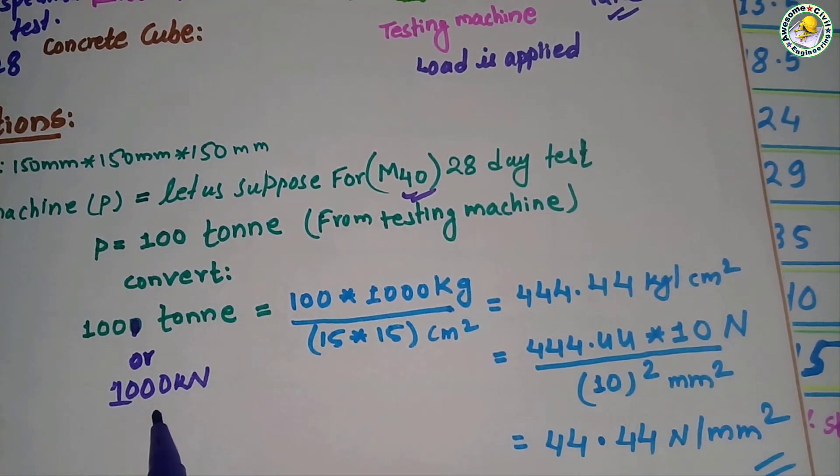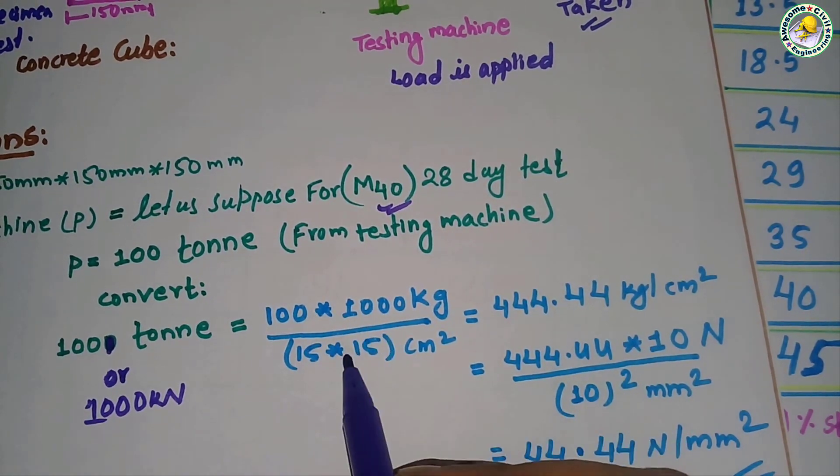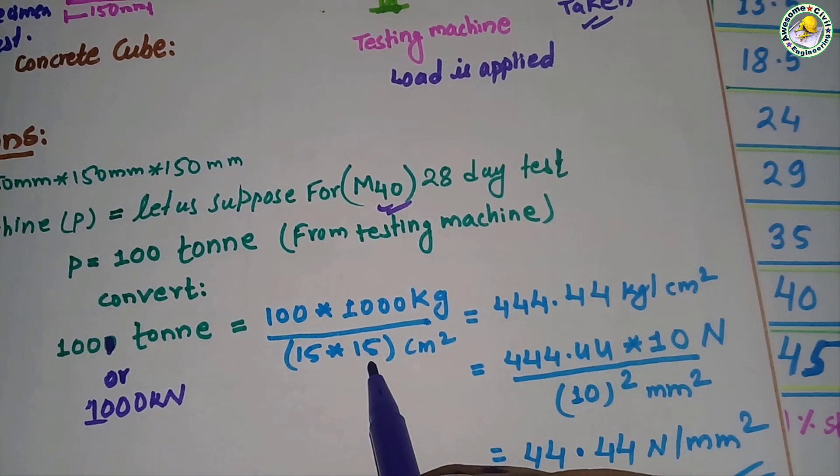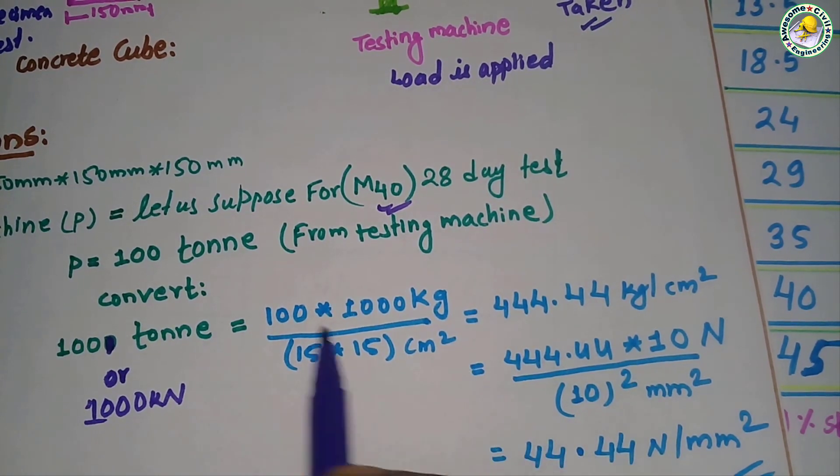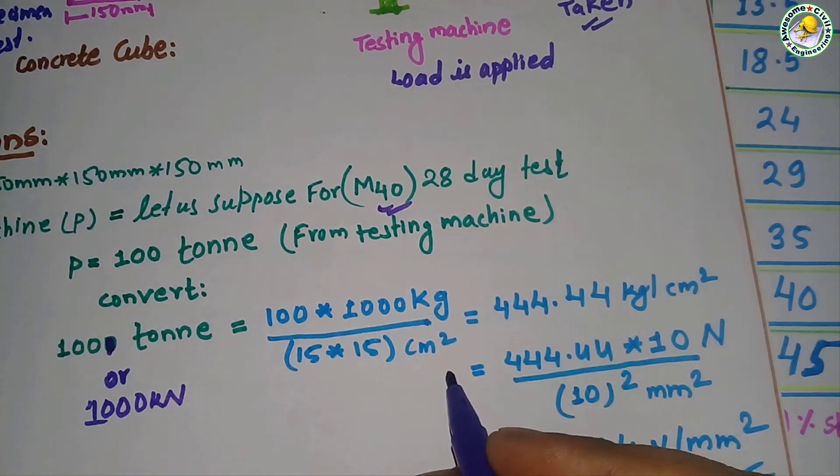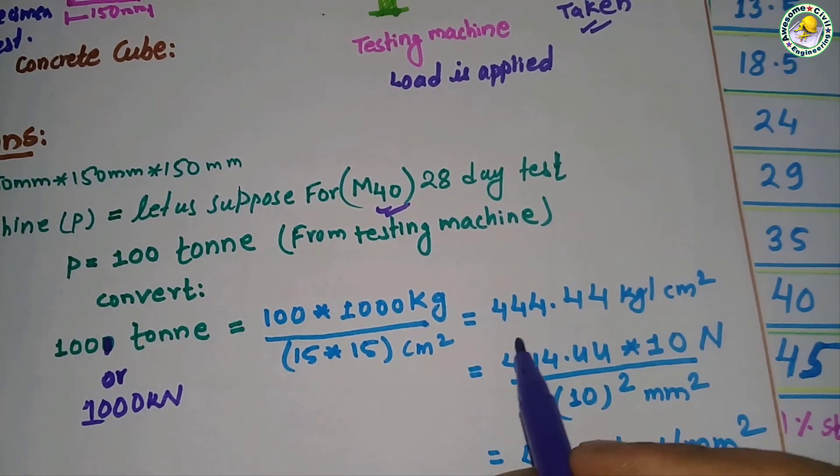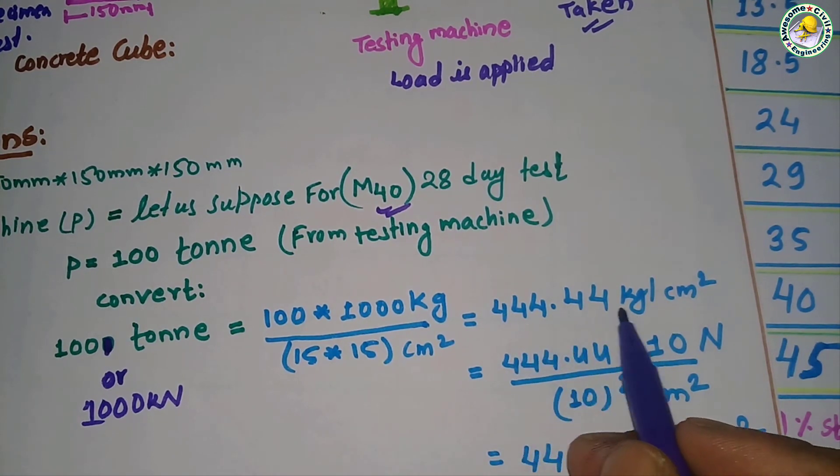Now see how the calculation is done: 100 ton or 1000 kilonewton equals 100 × 2000 divided by 15 × 15 centimeter square, because we have taken mm, so it should be converted into centimeter. Then it comes 444.44 kilogram per centimeter square.